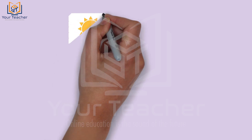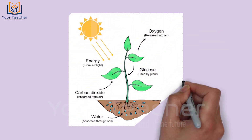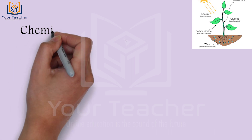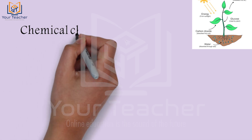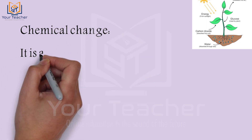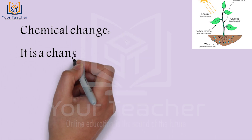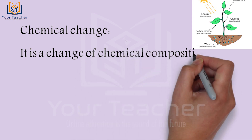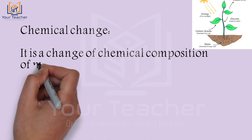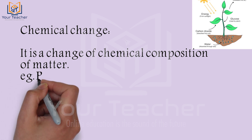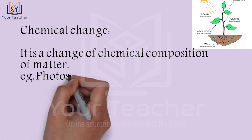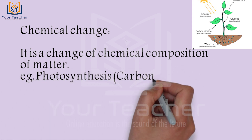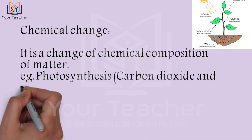What is a chemical change? It is a change in the chemical composition of matter. For example, photosynthesis.